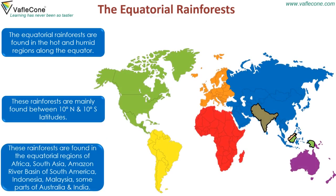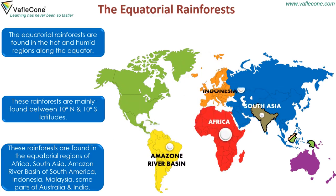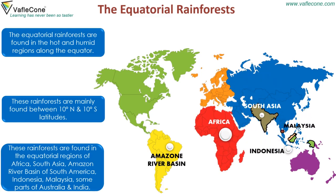These rainforests are found in equatorial regions of Africa, South Asia, the Amazon River Basin of South America, Indonesia, Malaysia, and some parts of Australia and India.